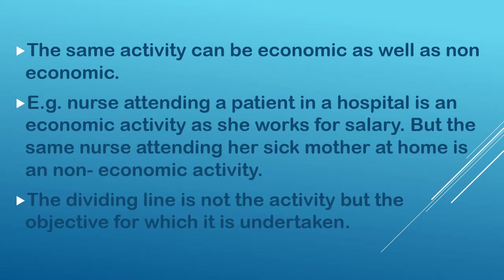The dividing line is not the activity but the objective for which it is undertaken. In the first case, she cares for a patient in the hospital and in return she gets a salary — that is an economic activity, done with the motive to earn income. When she cares for her sick mother at home, she expects no monetary return; it is out of care and love. So the dividing line is the objective.